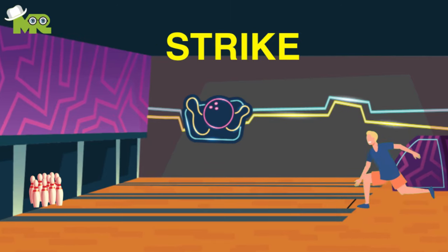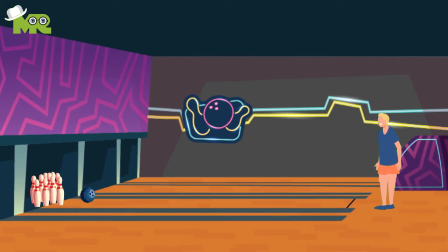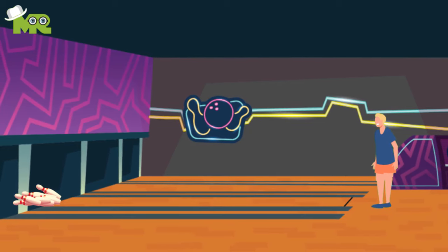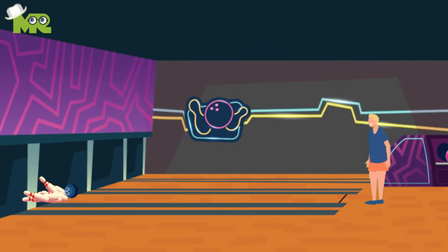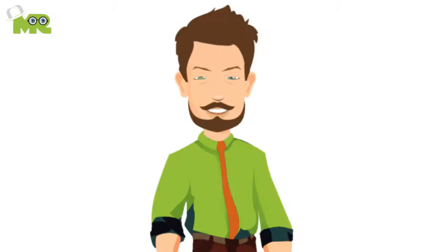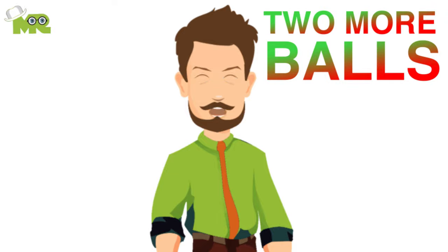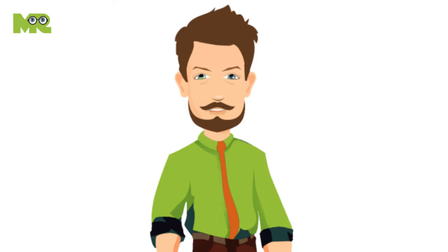It is called a strike if you knock down all the pins with the first throw of the ball. It is called a spare if you knock down all the pins with the second ball. Each game consists of ten frames. If you bowl a strike in the tenth frame, you get two more balls. If you throw a spare, you get one more ball.